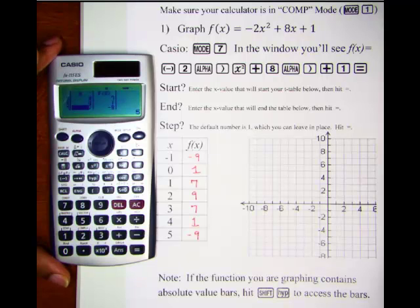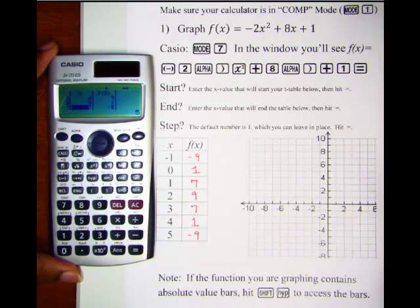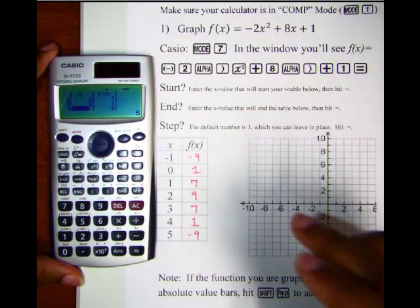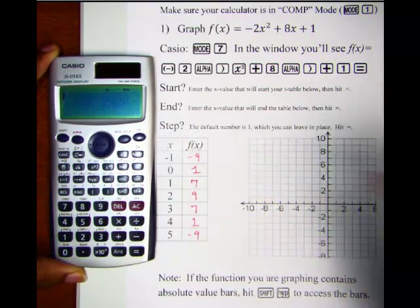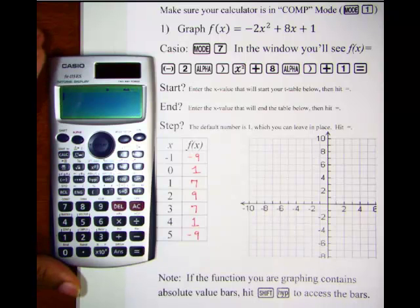So our calculator has done quite a bit of work for us. The Casio has done its part. To get back to the original screen, you simply hit mode 1. It takes you back to the original screen.